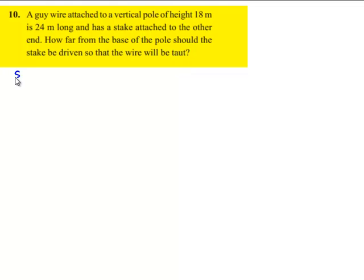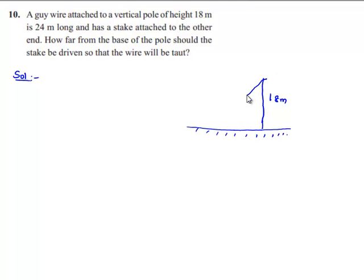Now moving on to the solution. There is a vertical pole of height 18 meters from the ground and a wire is attached of length 24 meters to which a stake is attached to the other end on the ground.